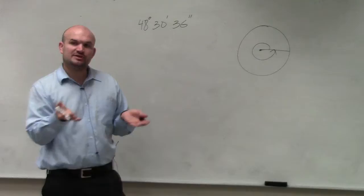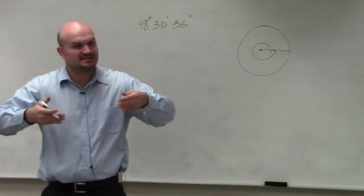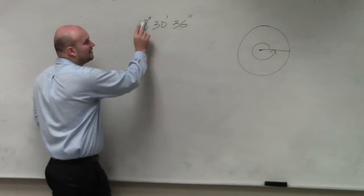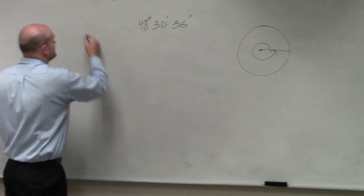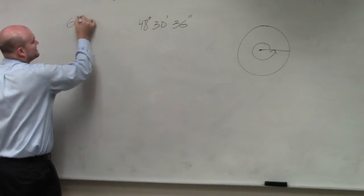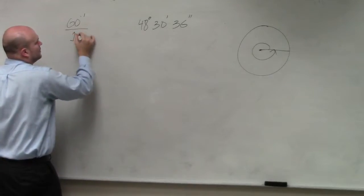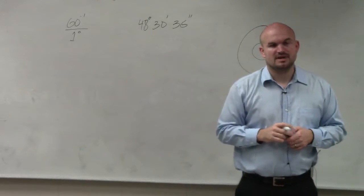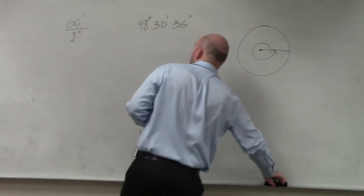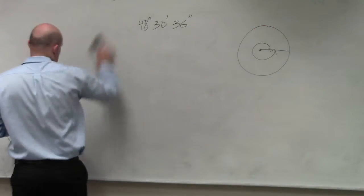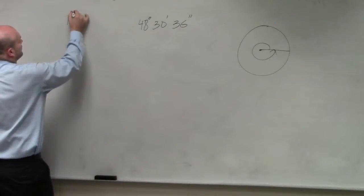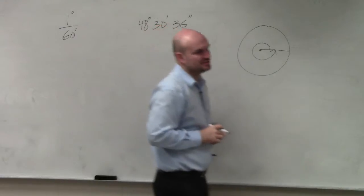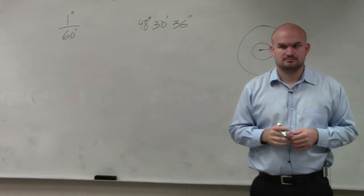And just like time, what we do is we calculate how many minutes does it take to make a degree. And it's the same kind of conversion with how many minutes does it take to make an hour. So 60 minutes is one hour. It's also one degree. Actually, let me rewrite it the other way. One degree is equivalent to 60 minutes.